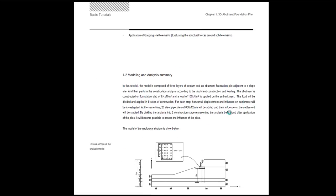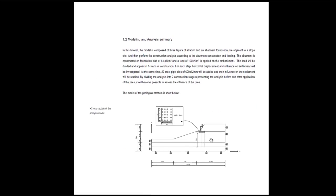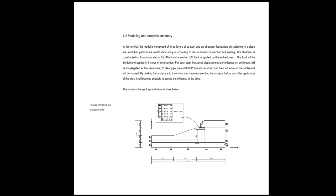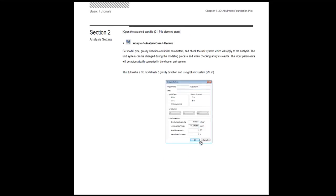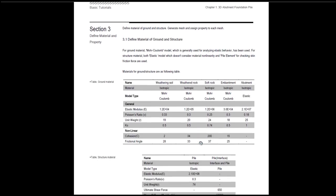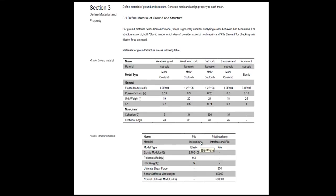Let me show you the details — this is a cut of the model. The soil will be composed of 3 layers of ground, with characteristics shown in the table. You have weathering soil, weathered rock, and soft rock, as well as material for the embankment and the abutment. The structural materials will be elastic, the soil will use a Mohr-Coulomb model, and there are also materials for the pile and foundation.